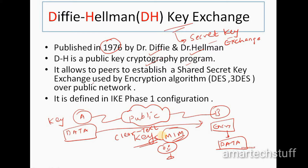Diffie-Hellman is defined in the IKE Phase 1 configuration. Don't get confused - I will explain IKE Phase 1 in detail in a later chapter, perhaps chapter 7 or 8. There is something known as IKE Phase 1 and IKE Phase 2. When you are configuring IPSec VPN, whenever you configure Phase 1, that is where you have to define this Diffie-Hellman key.